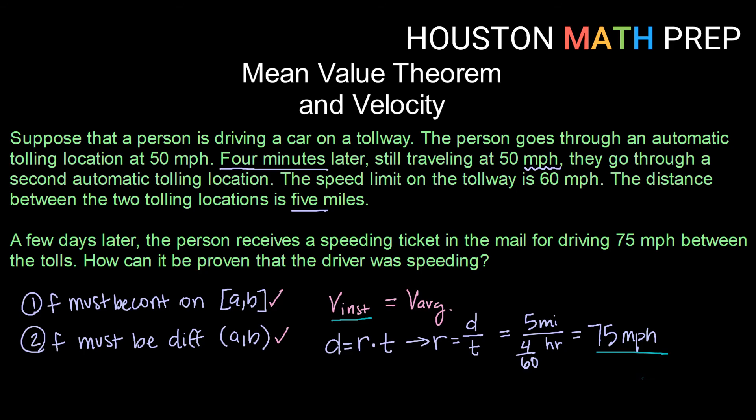Therefore, it can be proven that this person was indeed going 75 miles per hour at least one time between the toll booths, thus the speeding ticket. Moral of the story, guys, is be careful about your speed on tollways. And remember that this calculus that we're learning does have applications in the real world.